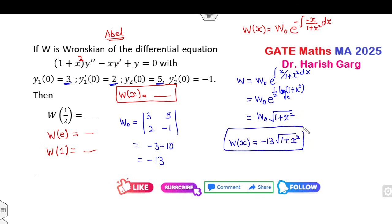Now whatever they will ask you can find the corresponding value. If they ask you w of half then it is minus 13 1 by 4 root 5 divided by 2. If they ask you to find w of 1 then you can substitute w of 1 then it will be minus root 30.